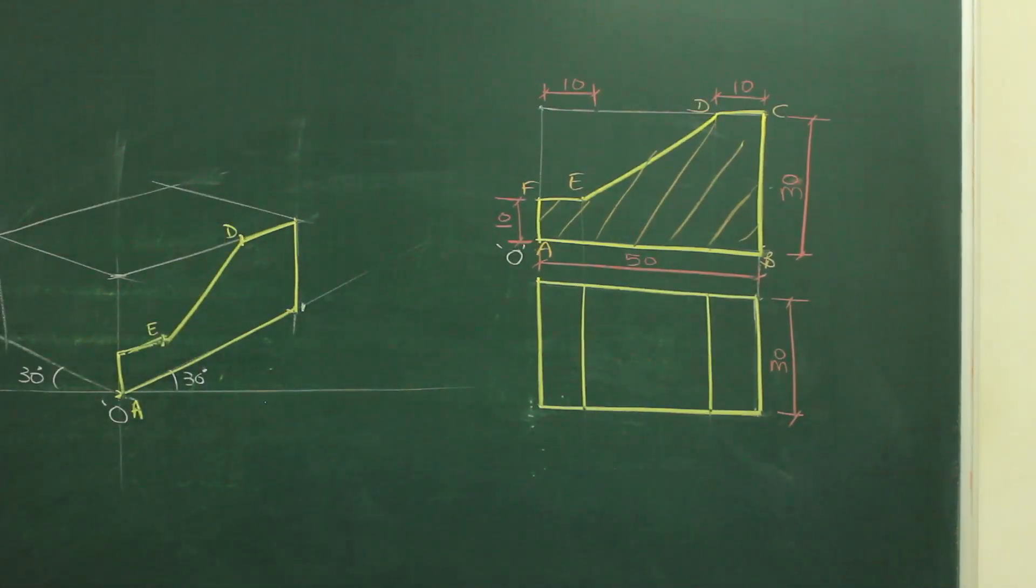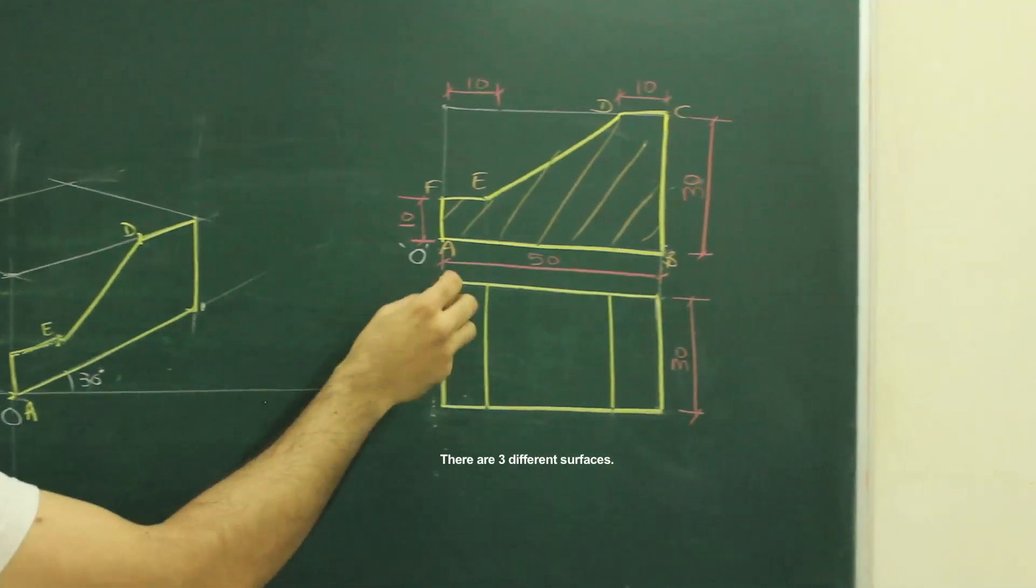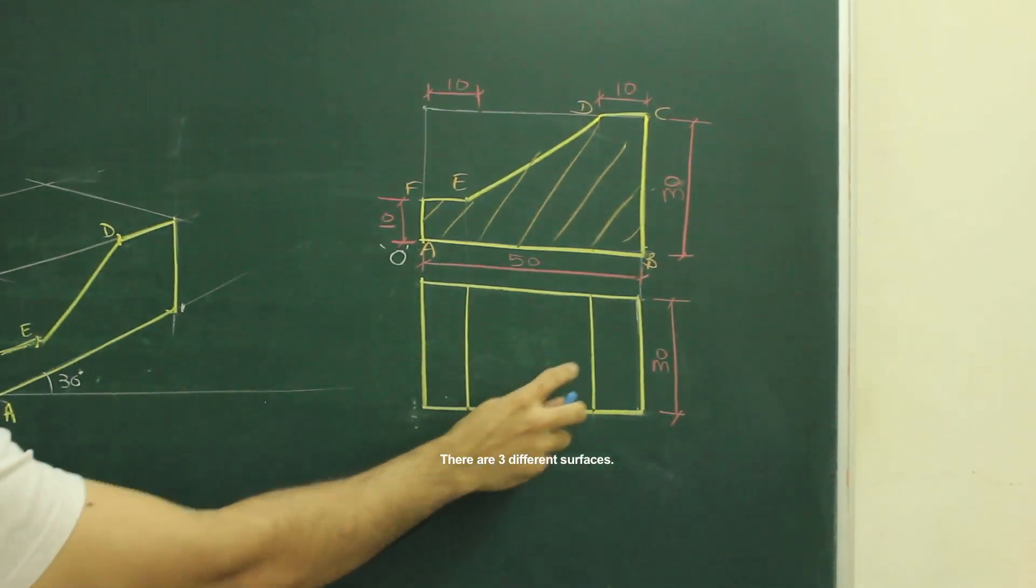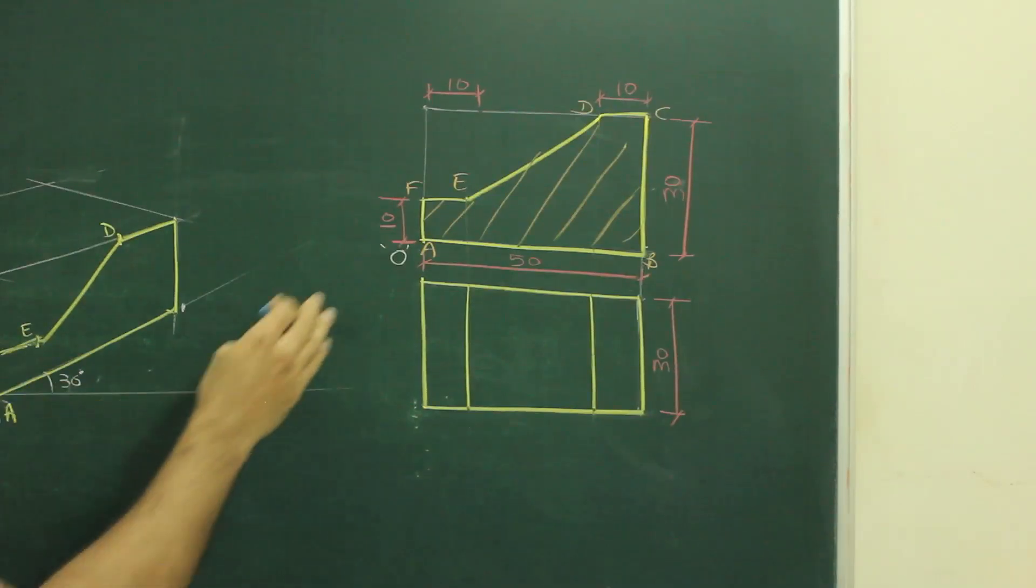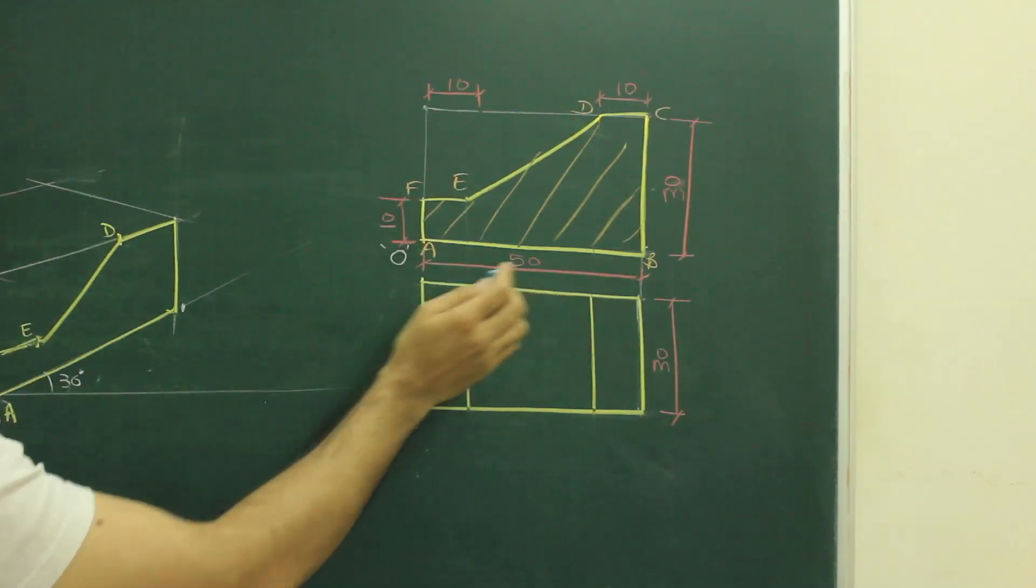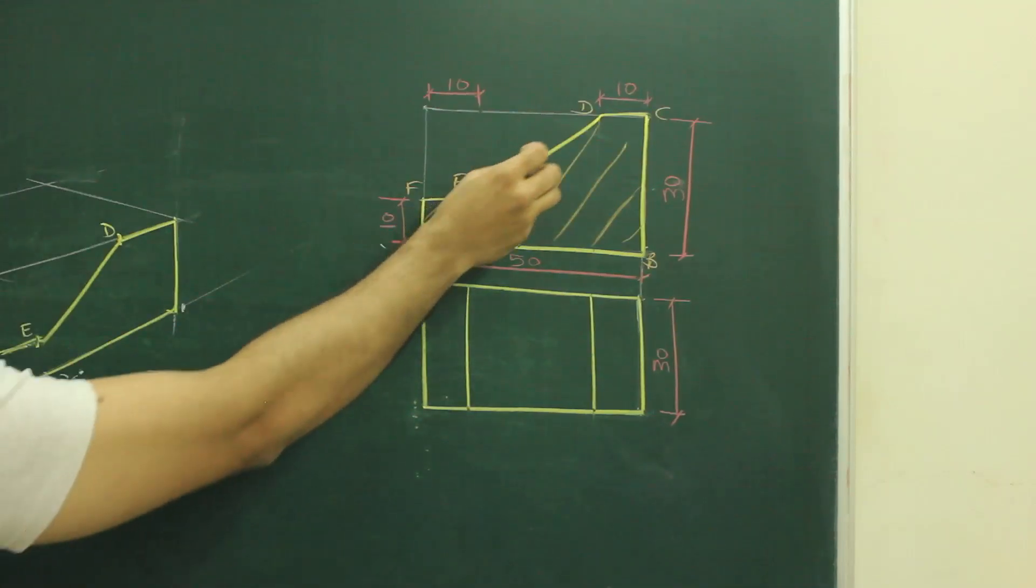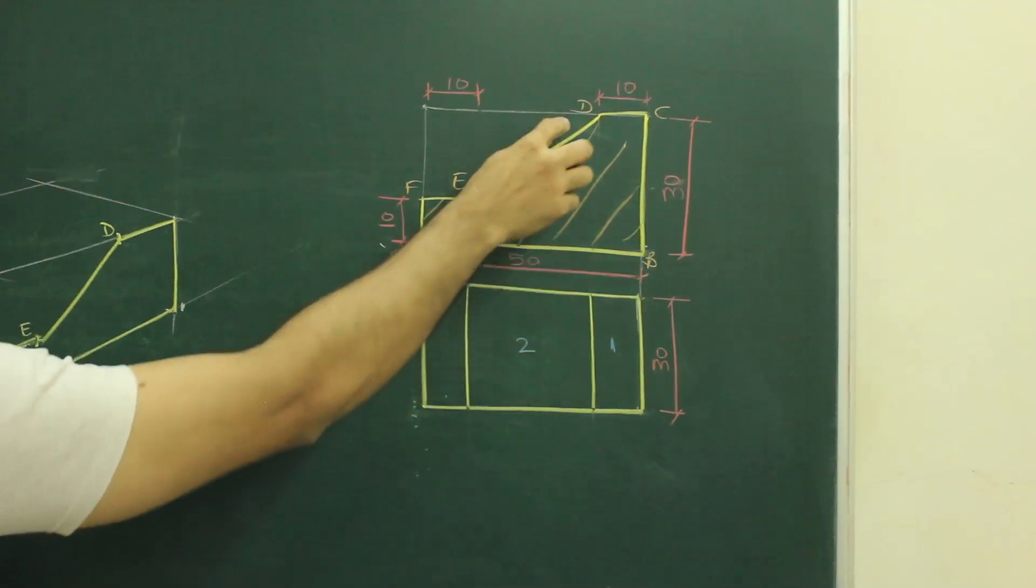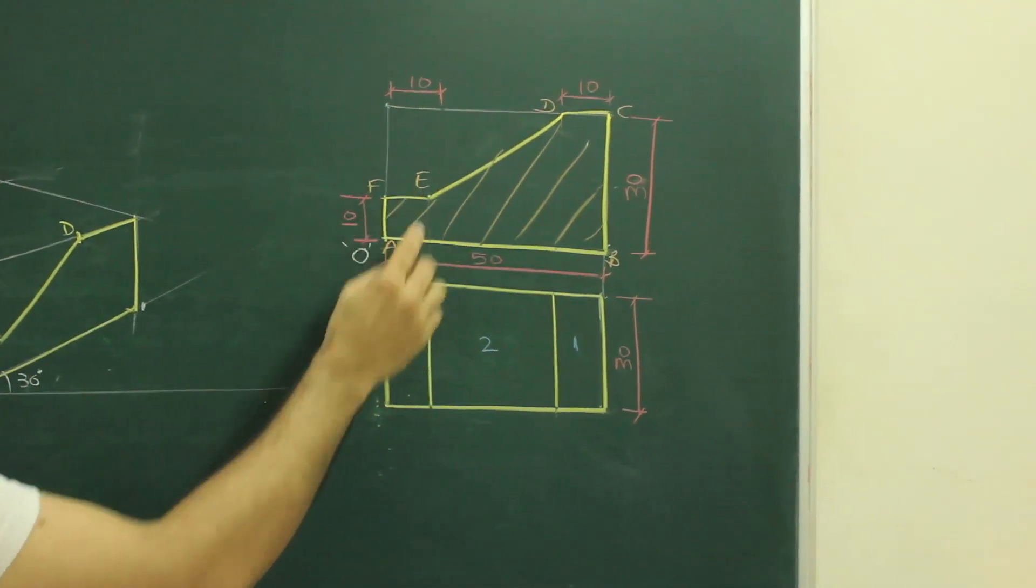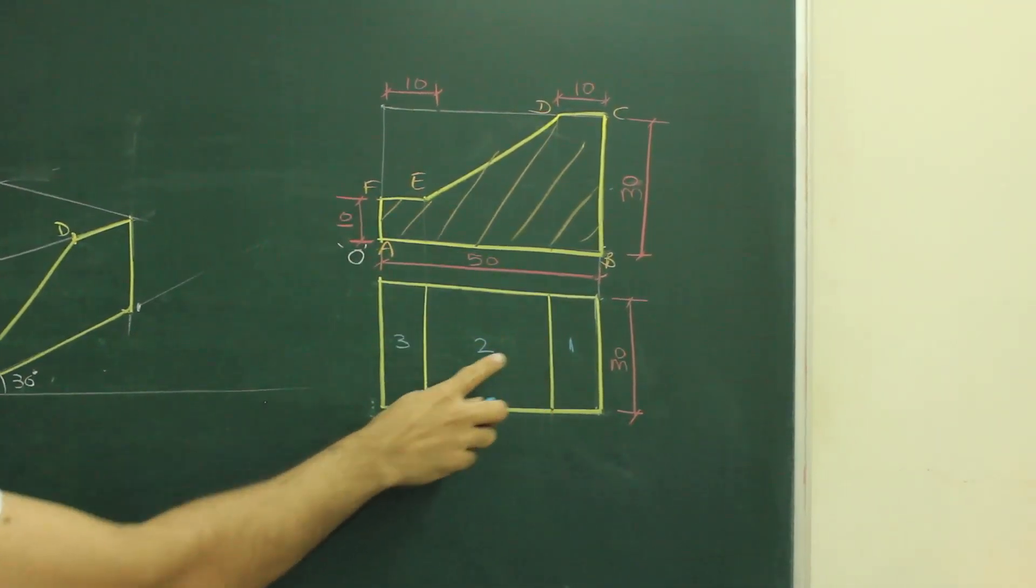Now after completing front view, if you see top view, there are one, two, three rectangles. I can say there are three different surface or layers, three different surfaces. So if you see this first part, let's say this part, this is second part which is this slope, and this is third part. Now I will draw this step by step.